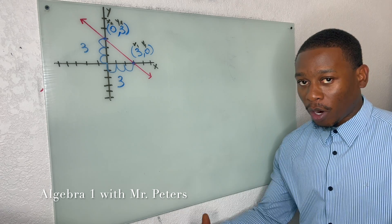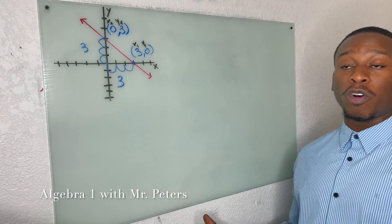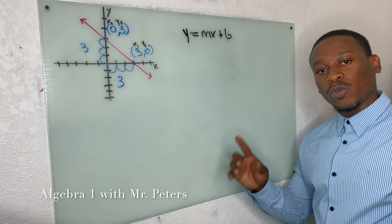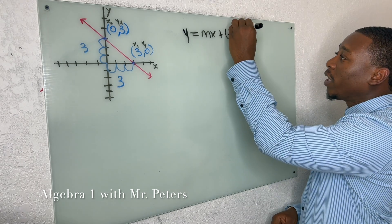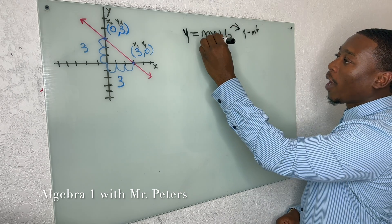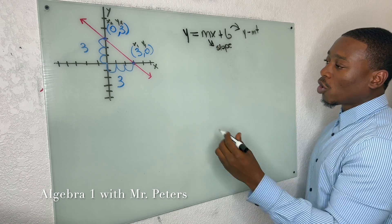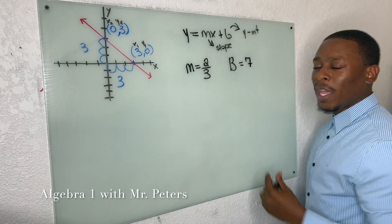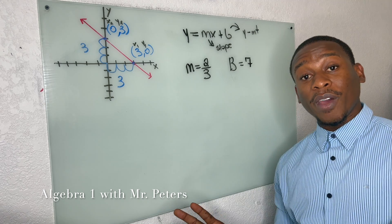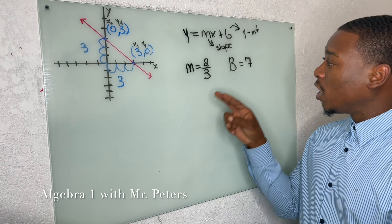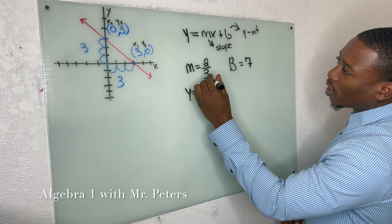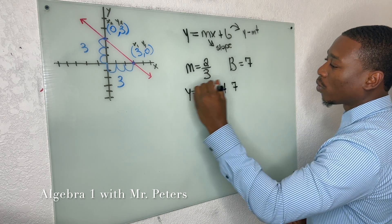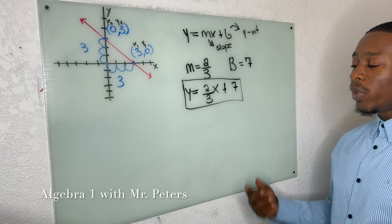Moving on to part 3 — we're going to be talking about slope-intercept form. That is the equation y equals mx plus b. We have to understand two things: b is the y-intercept and m is the slope. Typically they'll give us a slope and a y-intercept and tell us to create an equation. All we have to do is substitute: y stays the same, we substitute 2/3 in for m, x stays the same, and we substitute 7 for b.